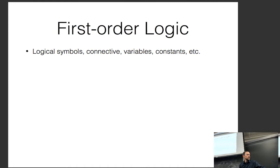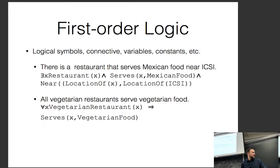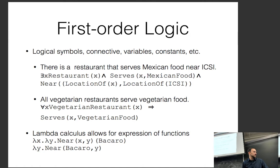One common general purpose representation is first-order logic — logical symbols, connectives, variables, constants, etc. An example from the reading: 'there is a restaurant that serves Mexican food near ICSI' maps to an existential statement with predicates restaurant, serves, near. It's also common to add lambda calculus, which allows you to define functions — very useful for compositional representations of natural language, especially for parsing.